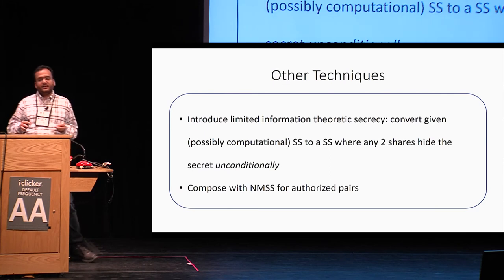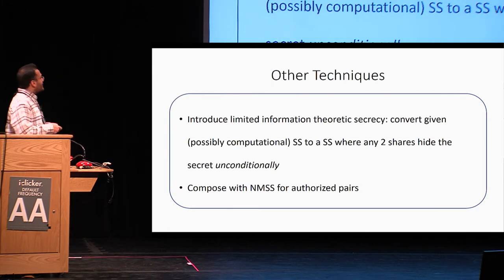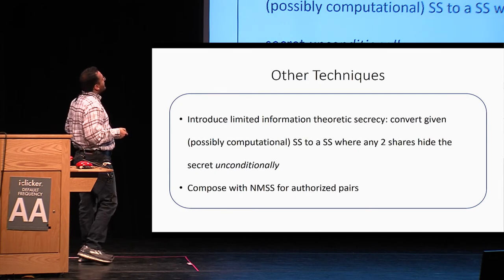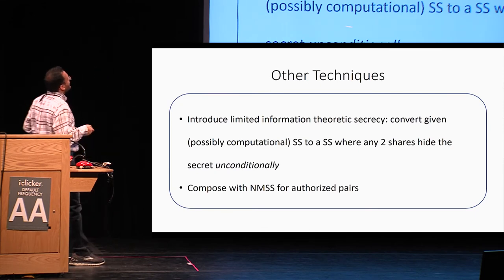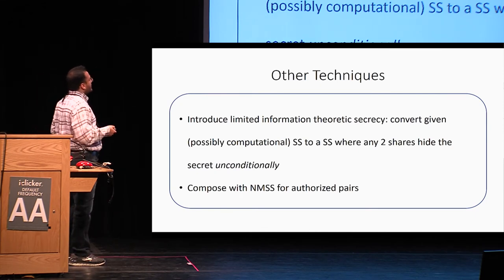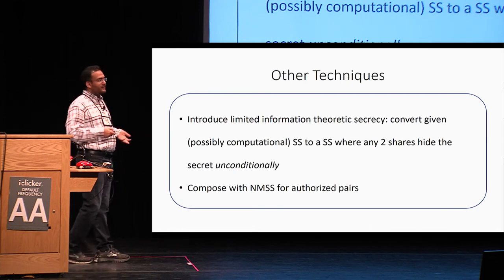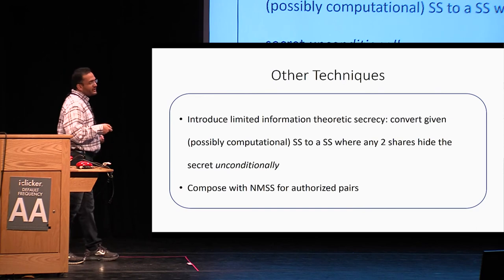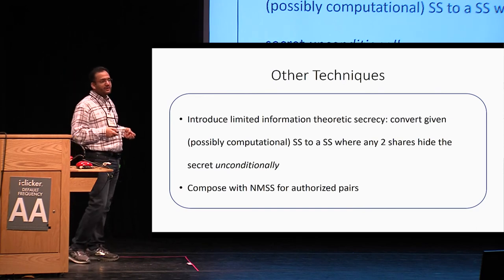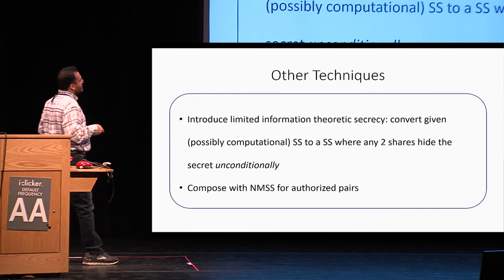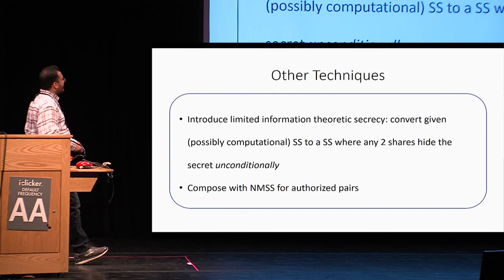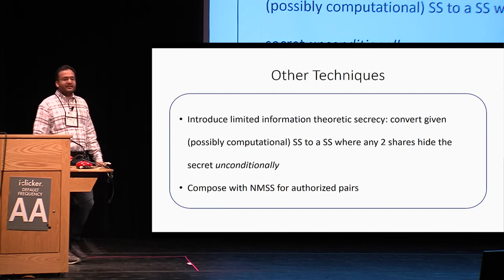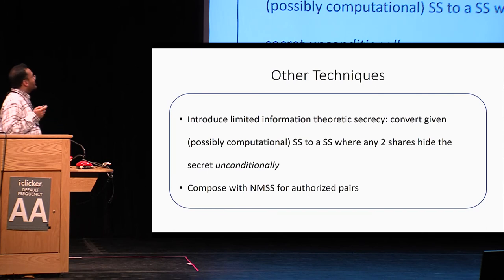We can conclude that L-tilde is independent of R and R-tilde is independent of L. From this point onwards, we can reduce the security to two-out-of-two non-malleable secret sharing. This is just a high-level overview — there are several other techniques involved, including converting the given secret sharing scheme into one with limited information-theoretic secrecy where any two shares hide the secret unconditionally, and we need to run two copies of the non-malleable secret sharing scheme in parallel.